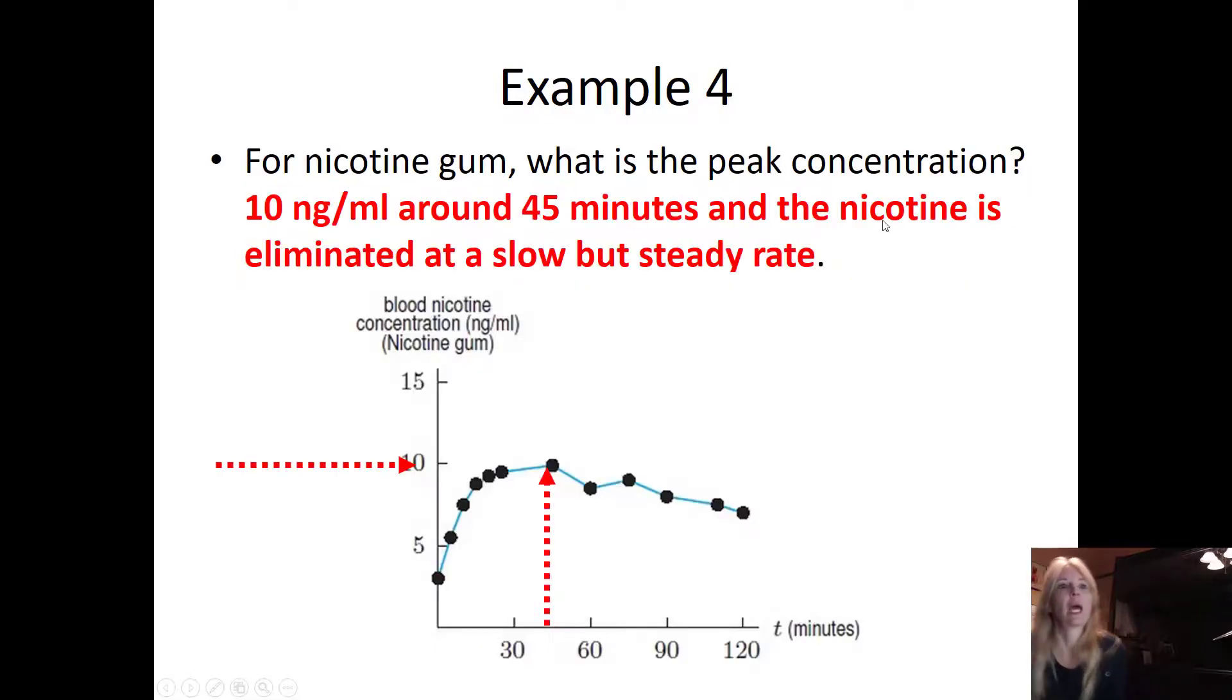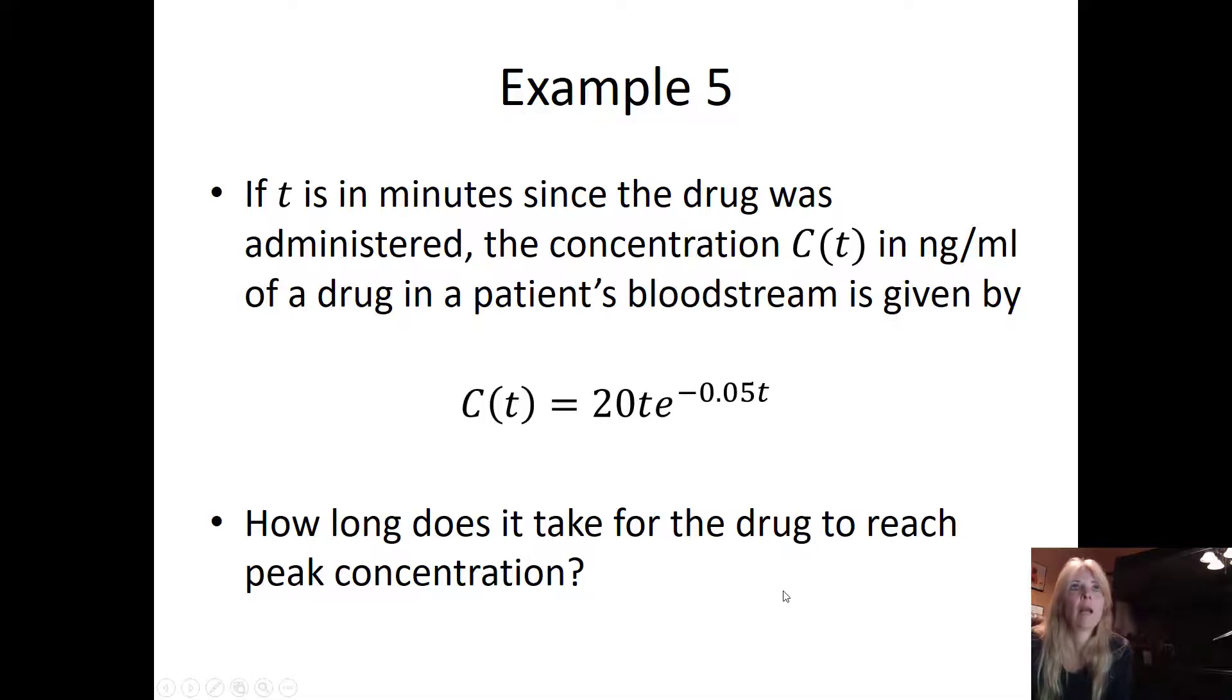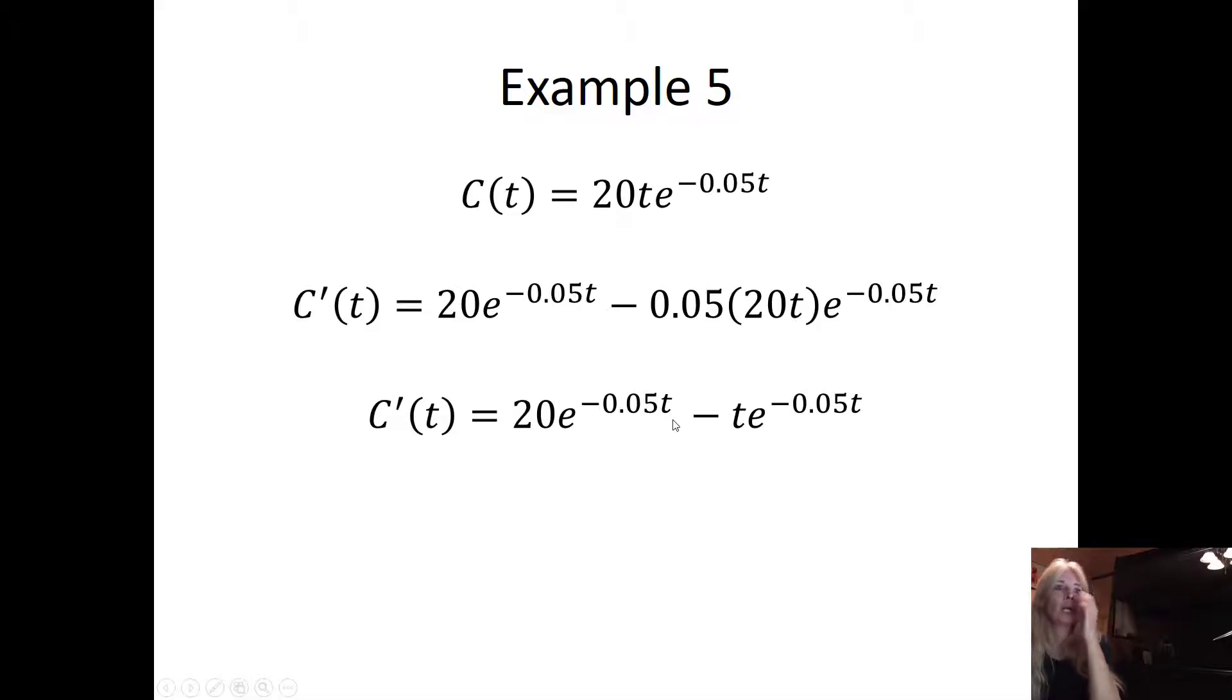Next example: if t is in minutes since the drug was administered, this is the concentration in a patient's bloodstream. Again, get used to looking at these—I see the linear piece and then I see my exponential decay piece. How long does it take the drug to reach its peak concentration? If you remember, how do you find a max? You take the first derivative. This is actually a product rule, so I would find that first derivative, set it equal to zero. This is good practice of the product rule.